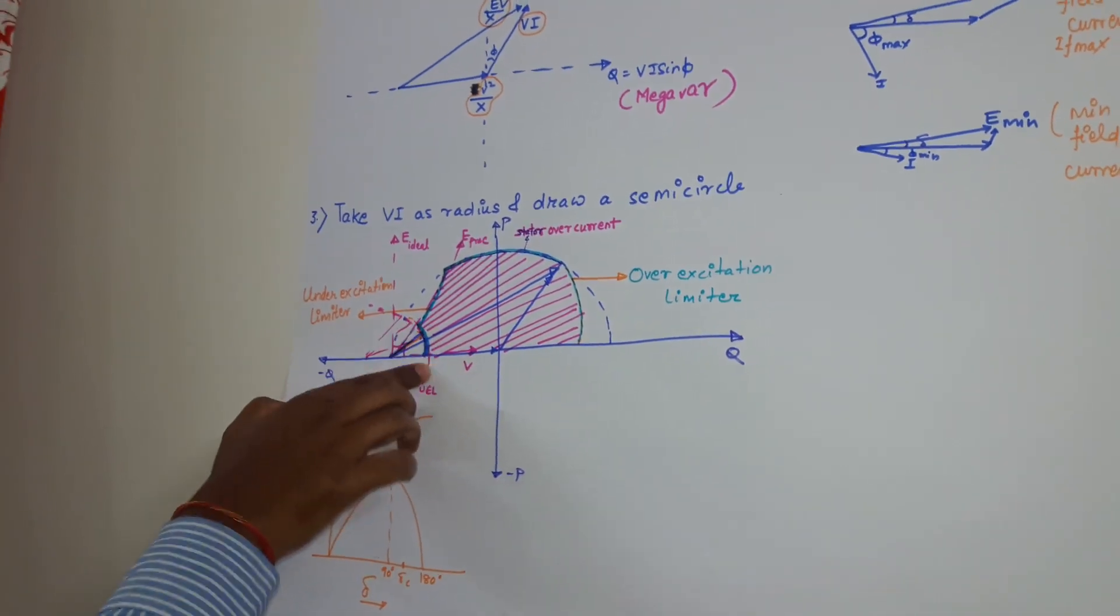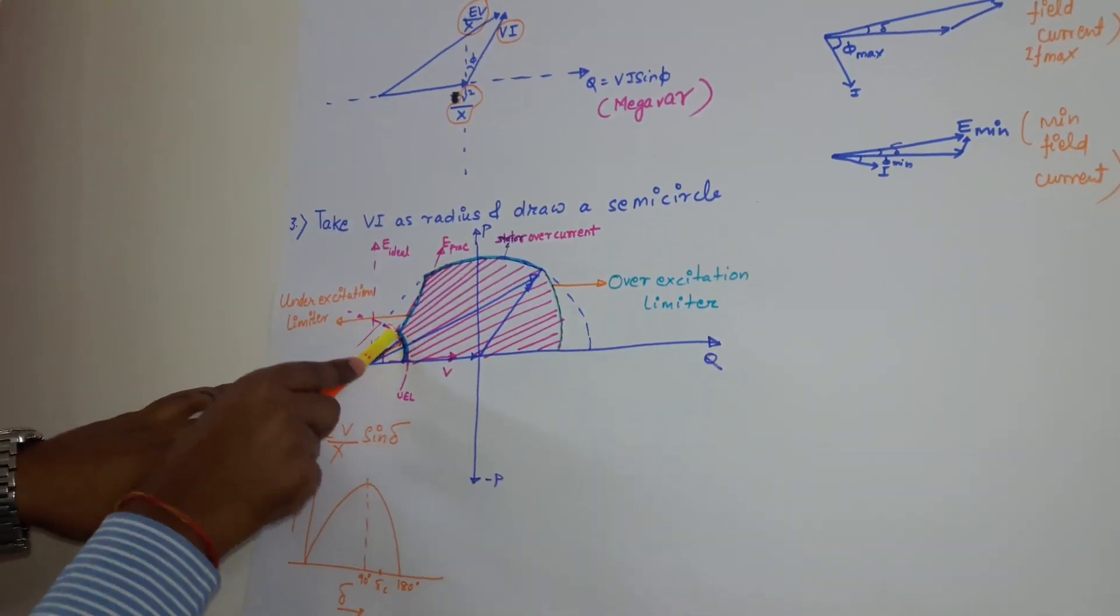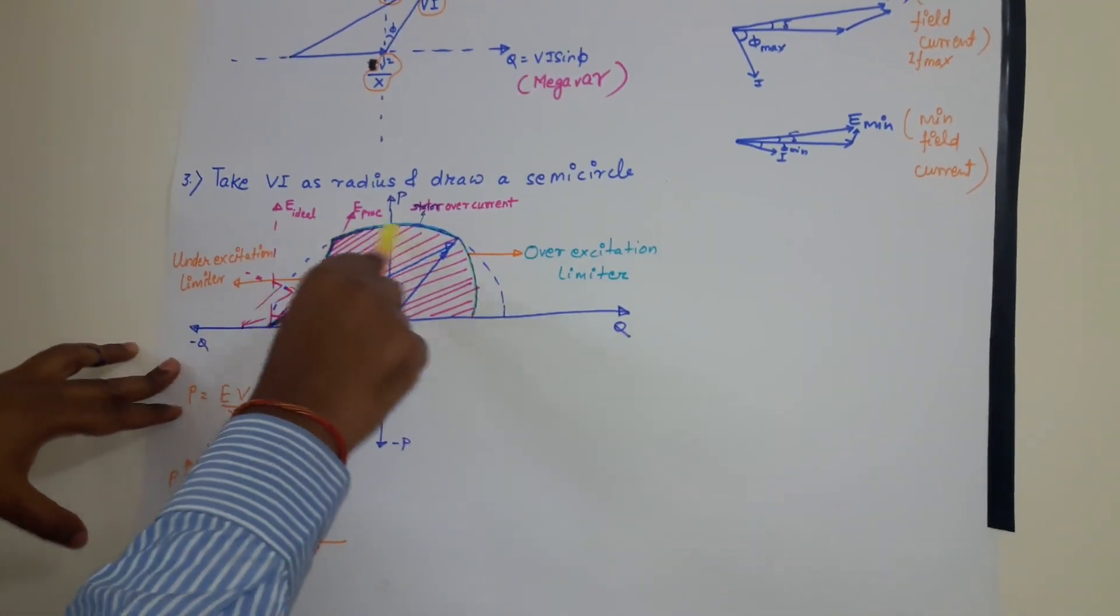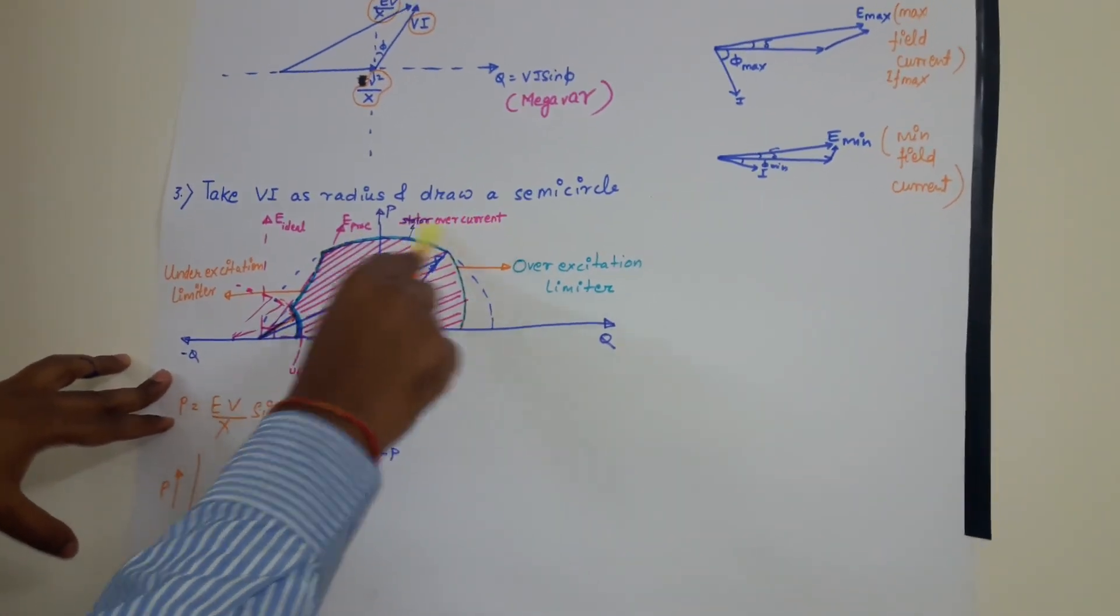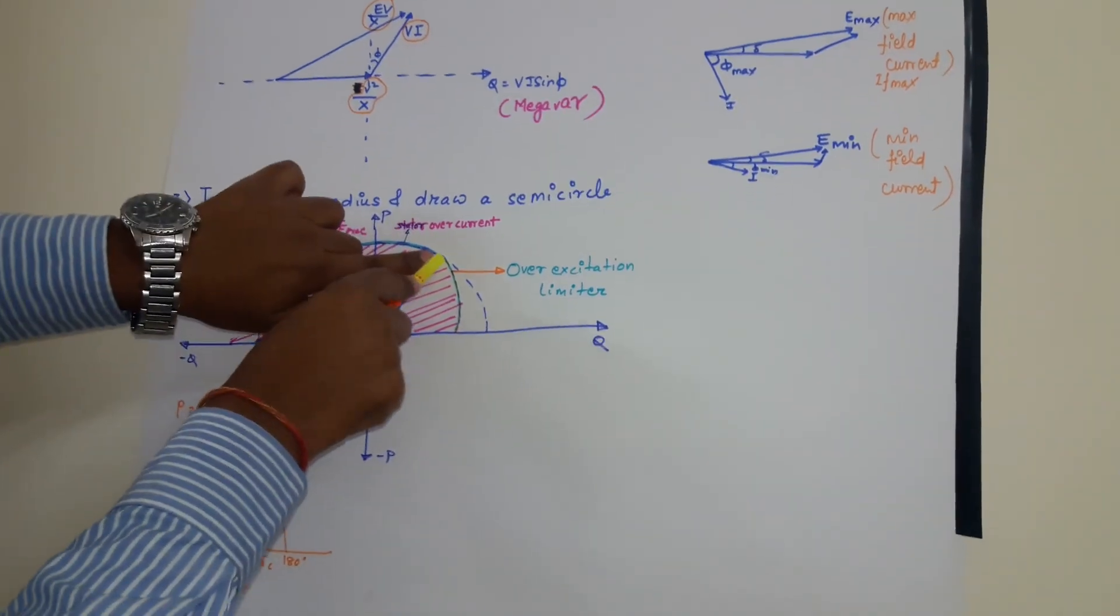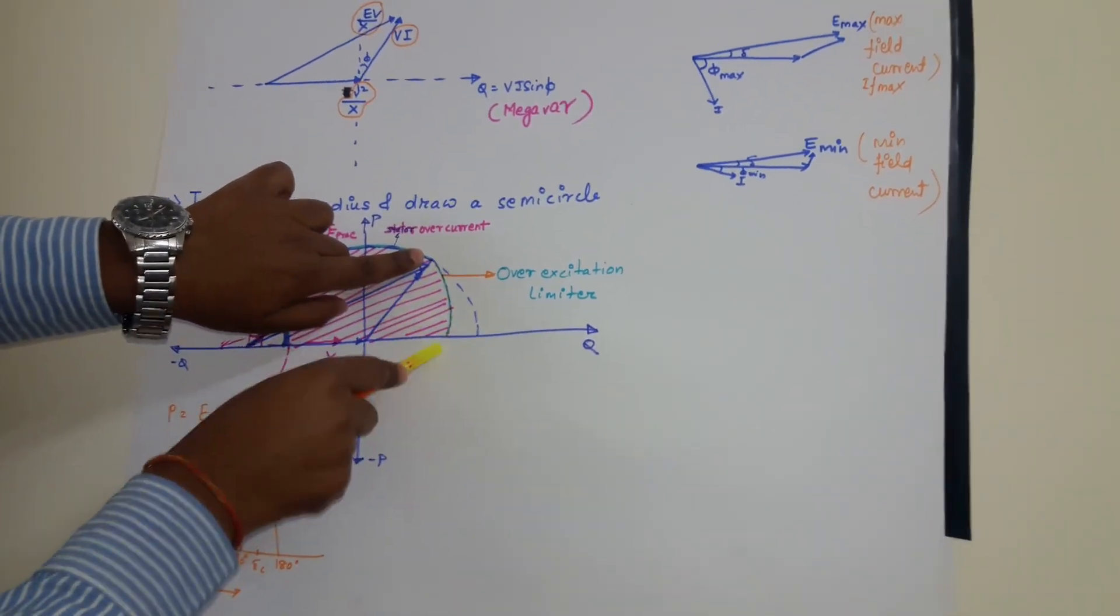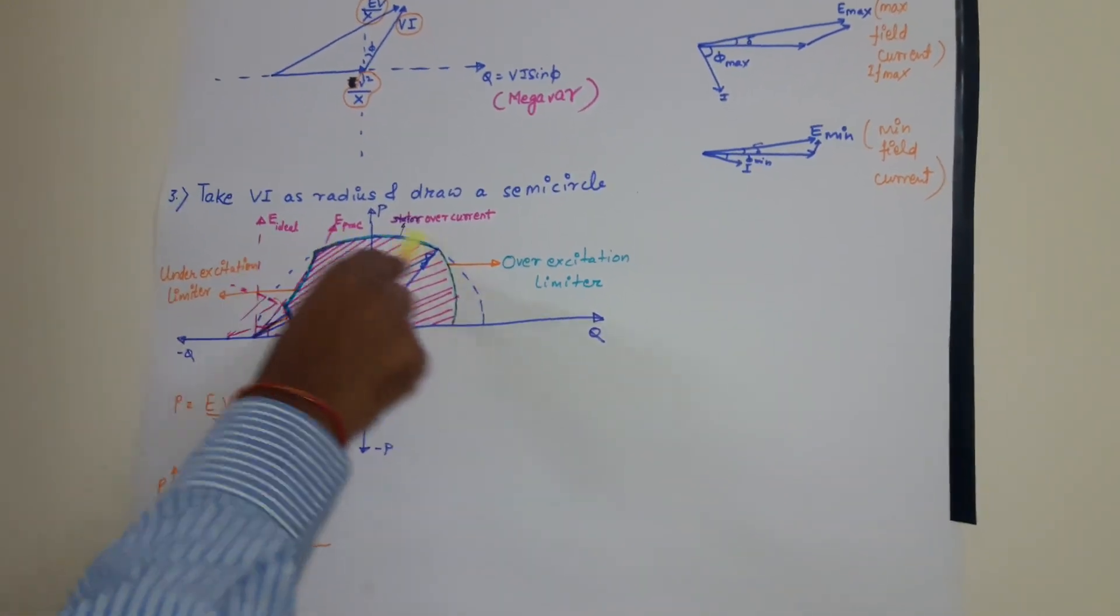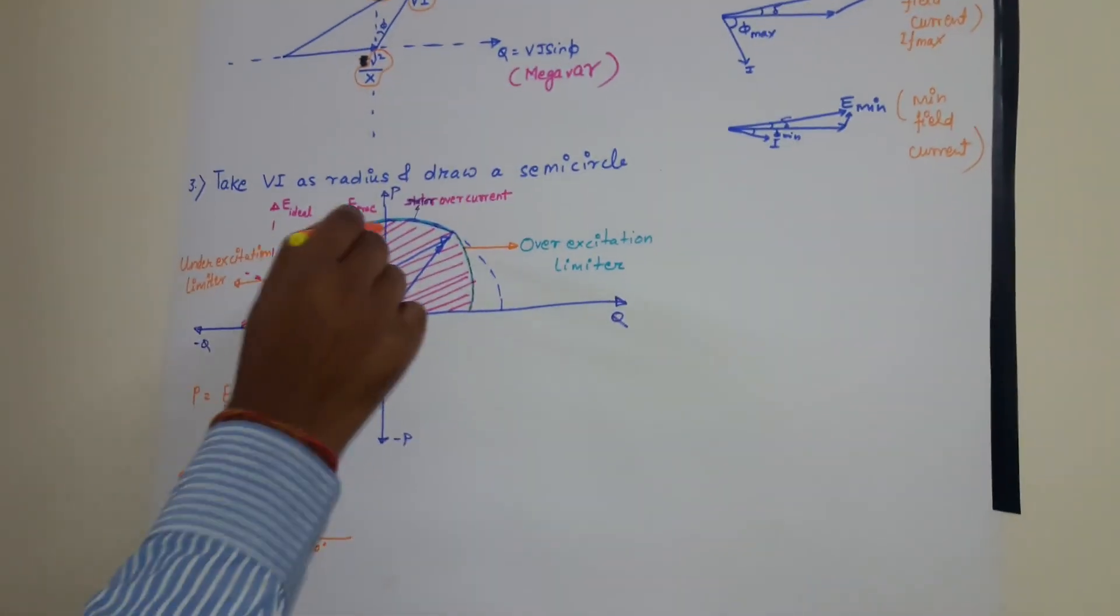So finally what we are getting, a curve like this, then like this. Then this is my full ability of generator of the load current, that is stator over current. And after that, the over excitation limiter like this. So the total zone is the capability curve of the generator, within which our generator can operate.